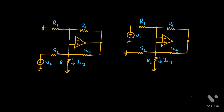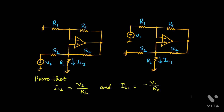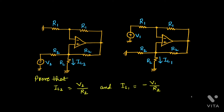The second sub-problem has source V1 connected to the inverting terminal and non-inverting is grounded. For that, we will find the current through the load, which is IL1. We will show that IL2 equals V2/R2 and IL1 equals minus V1/R2. Notice that IL1 and IL2 are independent of load resistance RL. Thus, these circuits are called voltage-to-current converters — from a voltage source we can generate a current source independent of load resistance.